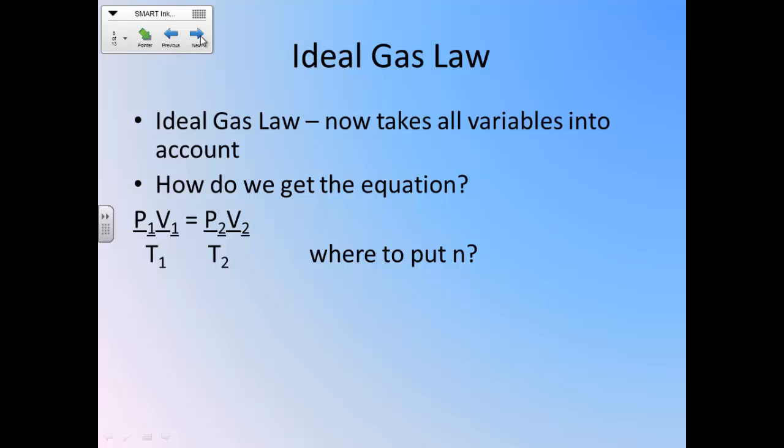And where does it go? If you look back at your minor gas laws that have N in them, was it on the top of the fraction or on the bottom of the fraction? On the bottom. So if we put all four of our variables together, our equation might look like this: P1V1 over N1T1 equals P2V2 over N2T2. This equation looks kind of messy. It looks like a lot of numbers to deal with and solve for every single problem. So we can actually clean this equation up a little bit. We can make it simpler to use.